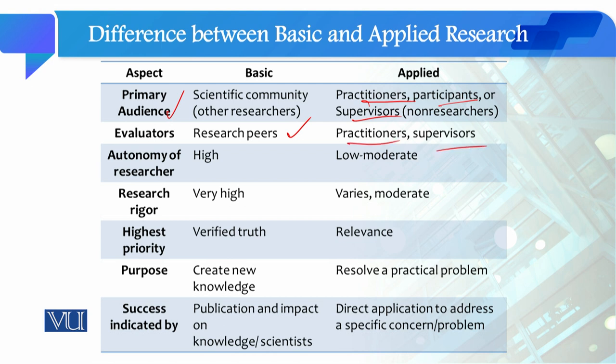When we talk about the autonomy of the researcher, in basic research, the autonomy is very high. The researcher is solely responsible for the findings and is considered the authority on the research problem. In applied research, the researcher has low to moderate autonomy, conducting research within the scope given by the funding organization, moderator, or government.